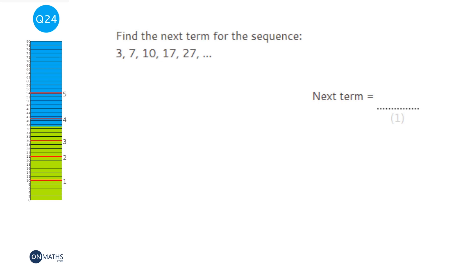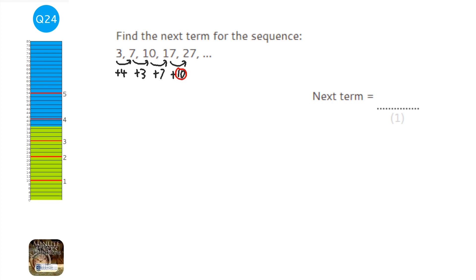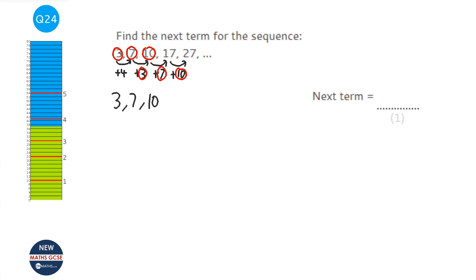We need to find the next term of the sequence. Working out the differences: +4, +3, +7, +10. This is a Fibonacci-type sequence — you add the two previous terms together. 3 + 7 = 10, 7 + 10 = 17, 10 + 17 = 27, so the next term is 17 + 27 = 44.